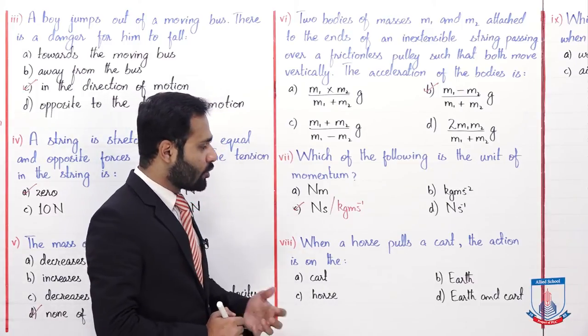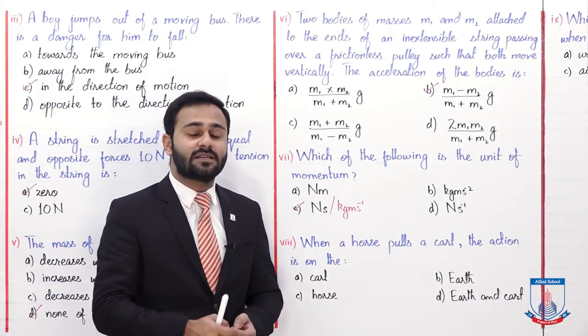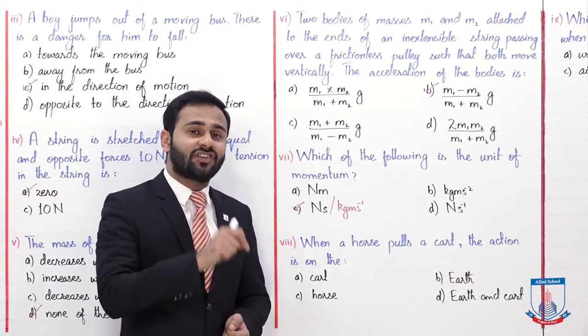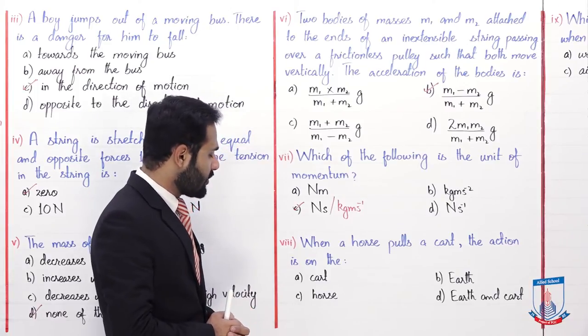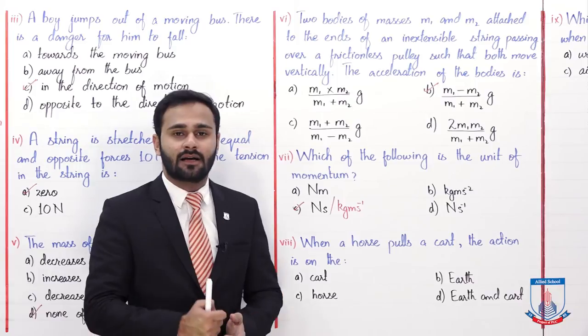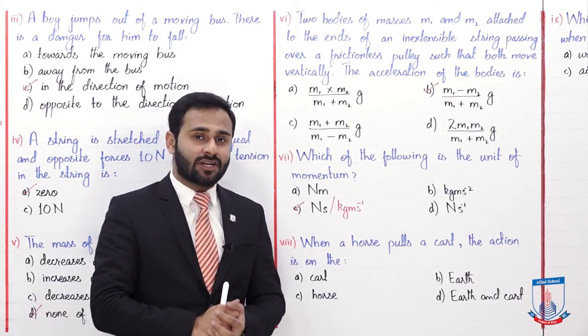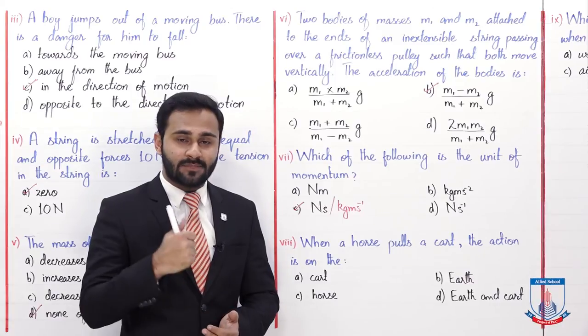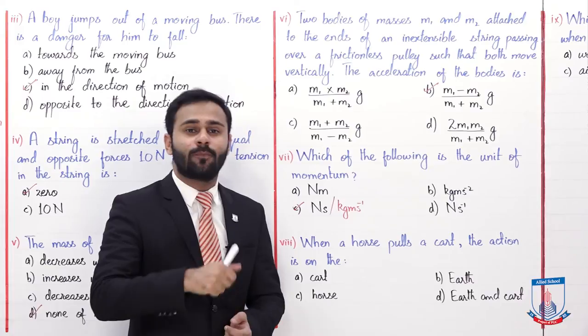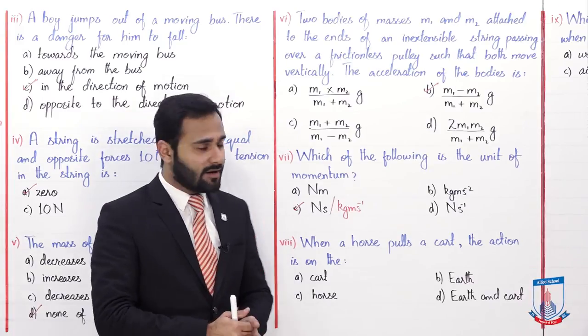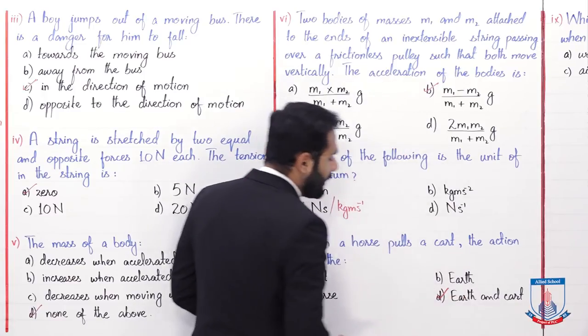Now the 8th MCQ: when a horse pulls a cart, the action is on? A cart, B earth, C horse and D earth and the cart. Basically, the horse applies an action force on the cart. When the cart moves, its tires apply an action force on the earth. So the correct option is D which is earth and the cart.